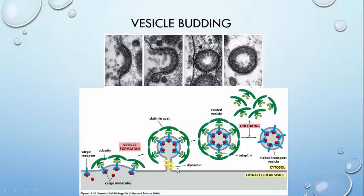A protein known as dynamin is then recruited to the bud, which forms a ring around the neck of the bud. As it tightens down, it effectively pinches off the bud. The vesicle is then released into the cytosol where the coat is removed so that the vesicle may bind with its destination membrane. It is important to note that the coat does not determine what is bound to it. Instead, it is the cargo receptors that are specific for a molecule. These receptors can be recruited by the adaptins to create a group of similar receptors that will eventually create a vesicle with a specific cargo. Just as the coats can vary, so can the adaptins. This creates specificity in the transport vesicles.